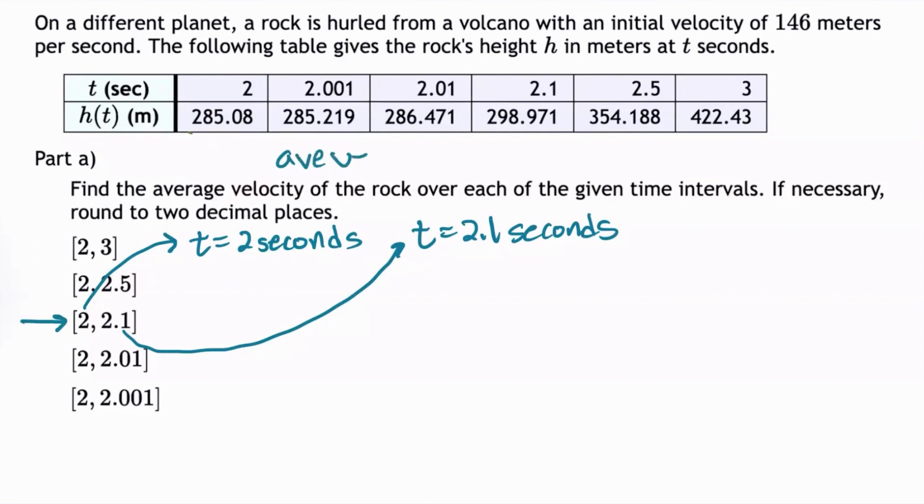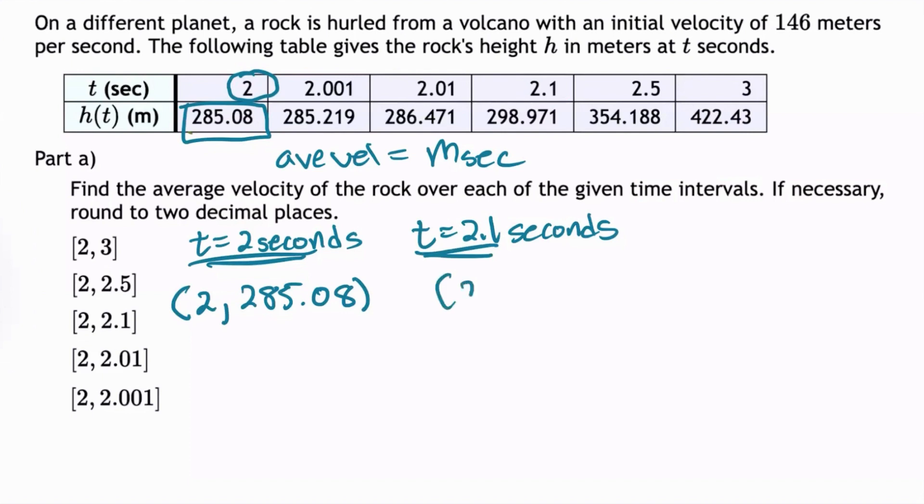So average velocity is the slope of the secant line, passing through the point at t equals 2 seconds and the point at t equals 2.1 seconds. So we need to start by finding those points. To find the point at t equals 2 seconds, we go to the table and look at the input value 2 and see the output value is 285.08. Likewise for 2.1, we go to the table and find 2.1 and see that the output is 298.971.